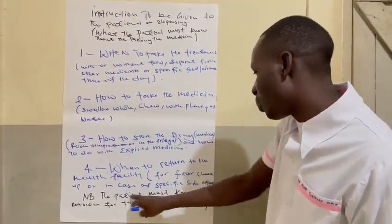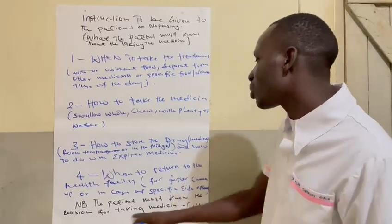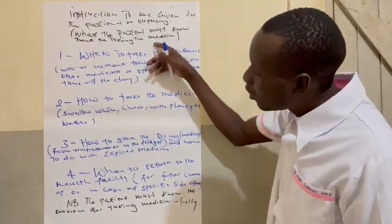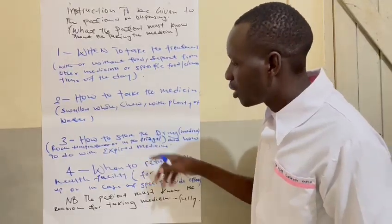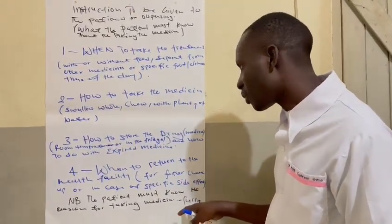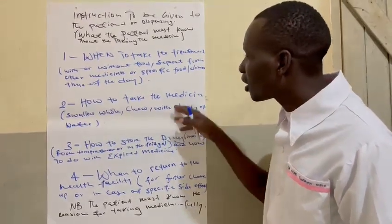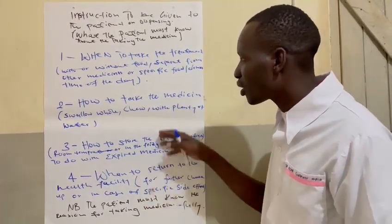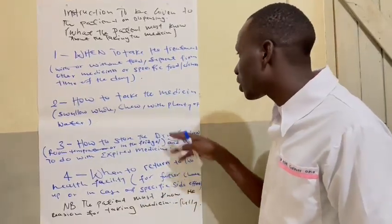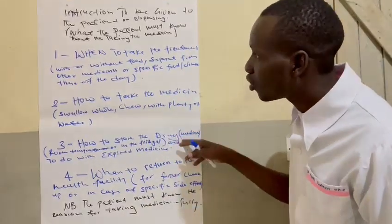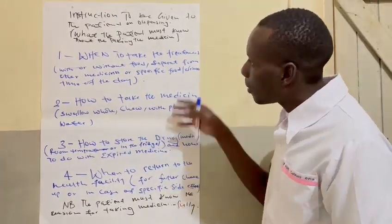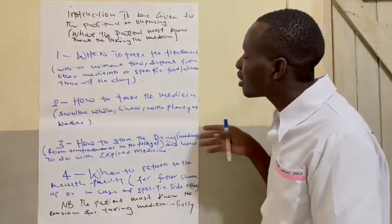The patient must know the full reason for taking the medication. If you do not give all this information, the treatment will not go well, because you are not the one in control — the patient is. So you have to give all the instructions. This can also help the patient adhere to the treatment. That is the information you must give to the patient.